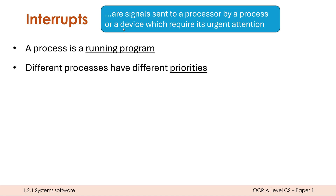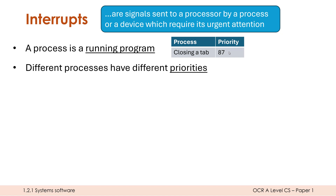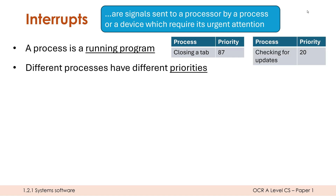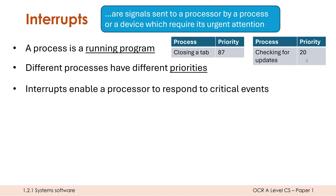One important thing to realize, both for this topic and for the scheduling video next in the playlist, is that different processes have different priorities. There is some level of importance — not all processes are equally important. What priority each process has is determined by the operating system, and how it does this will vary OS to OS. In this imaginary example, it's a 0 to 100 scale where 100 is most important and 0 is basically irrelevant. Closing a tab might have quite a high priority because the user expects it immediately, whereas a background check for updates is not as important and could be delayed. So we've got loads of normal processes active, and the CPU works its way through these, plus we also have interrupts.